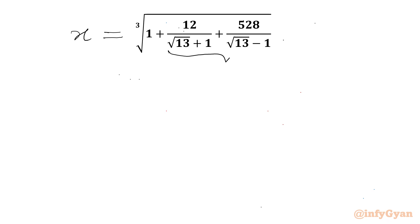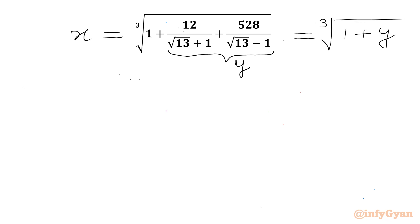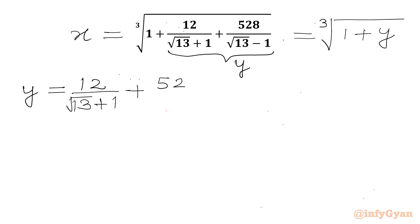Now I will call this inner part equal to y. So x is equal to cube root of 1 plus y. Now we have to find out or simplify y separately. So y is equal to 12 over square root of 13 plus 1, plus 528 over square root of 13 minus 1.